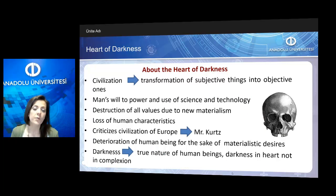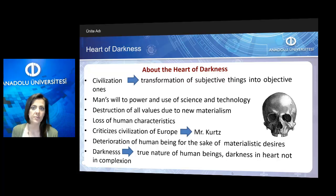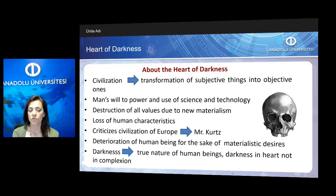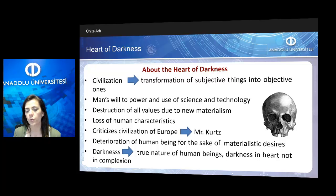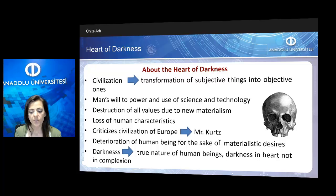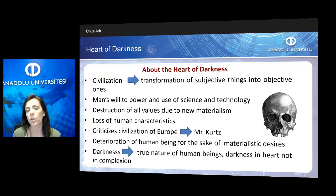Heart of Darkness mainly is about the civilization issue and focuses on the transformation of subjective things into objective ones. It stresses man's will to power and use of science and technology to achieve his ends and desires to gain more power. The main issue is the destruction of all values due to new materialism, resulting in the loss of human characteristics. Through the character of Mr. Kurtz, Joseph Conrad criticizes the civilization of Europe.